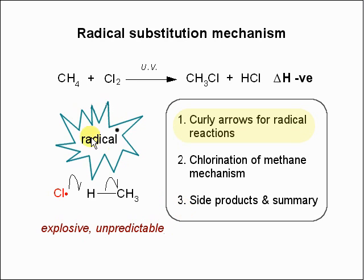The reaction we're interested in is methane reacting with chlorine under UV light, giving you chloromethane and HCl. It's an exothermic reaction, a radical reaction, a chain reaction, and it's rather explosive and unpredictable under certain conditions. It's a substitution reaction because you've substituted an H for a Cl.